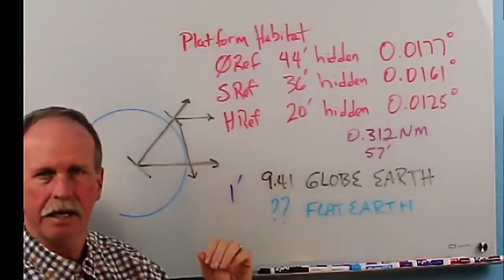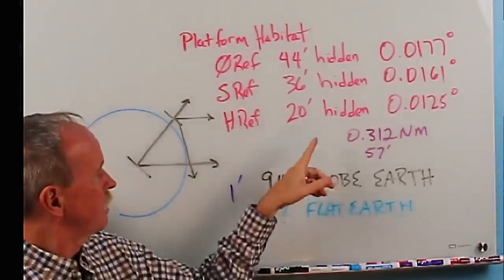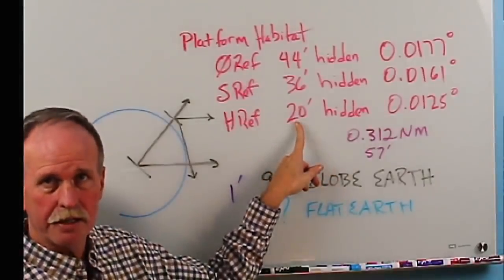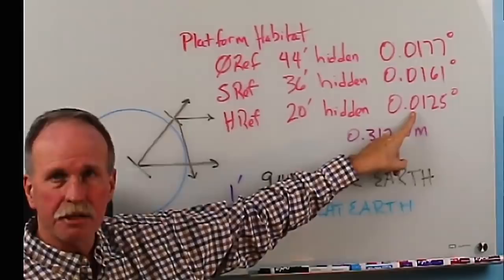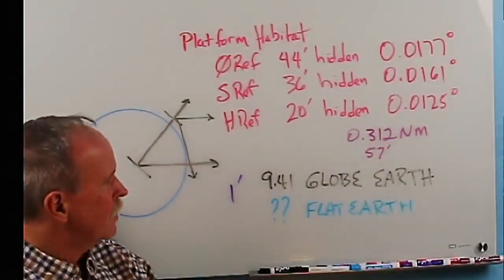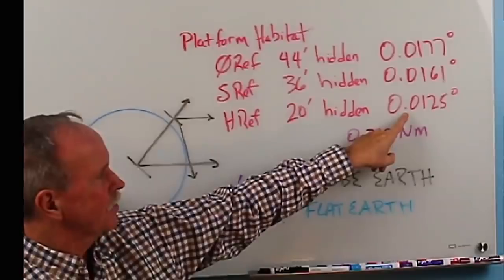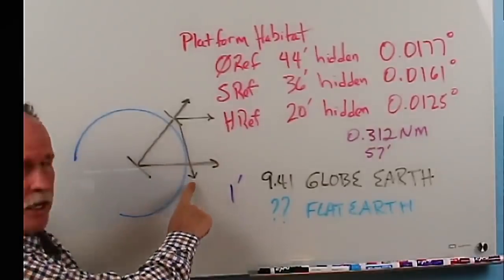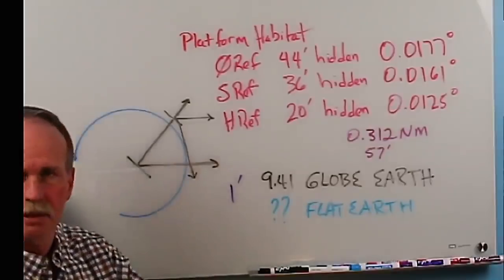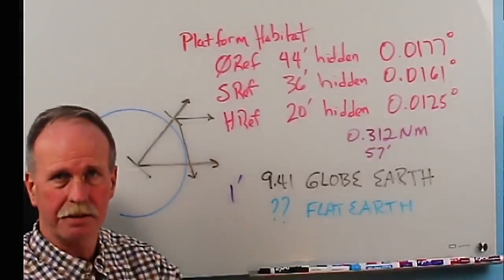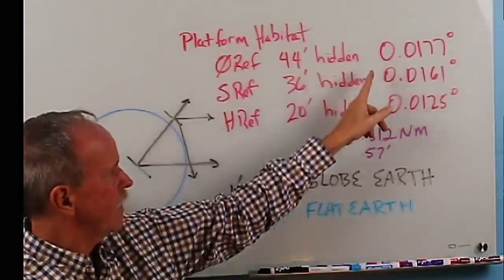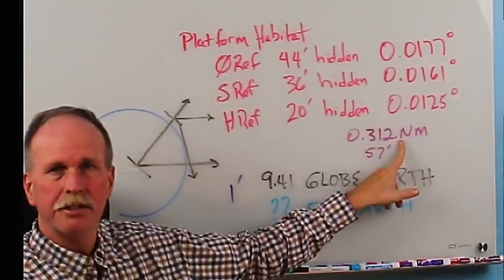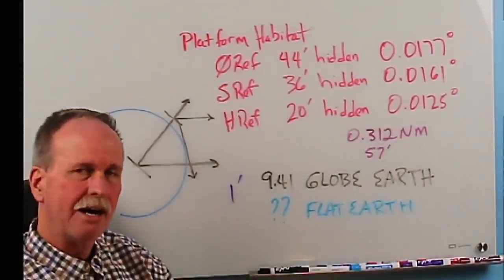On a standard refraction day, you have 36 feet hidden and 0.0161 degrees down to the horizon. You see it's a little higher. On a severely refracted day, like from the black swan image, where only 20 feet is hidden, if you find out what level of refraction is required to make 20 feet hidden, the angle to the horizon is 0.0125 degrees. Well, what's the difference between that angle to the horizon and that angle to the horizon? Because as you recall, part of our measurement on a sextant is the angle down to the horizon. Obviously refraction would change that a little bit.